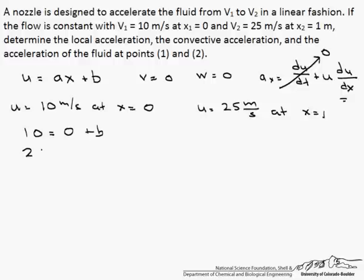So 25 which is u equals 1 times a, since x is 1, plus b. Two equations, two unknowns, therefore a equals 15, b equals 10.